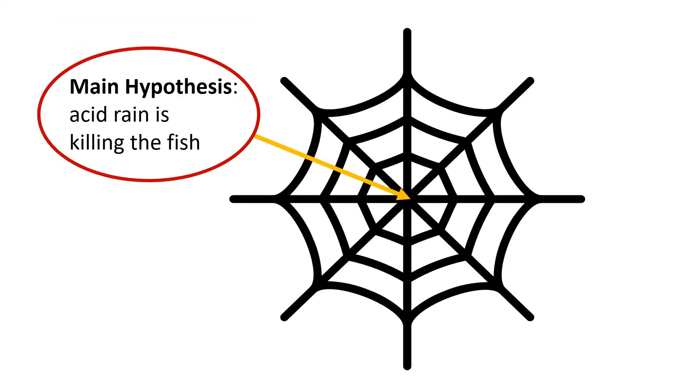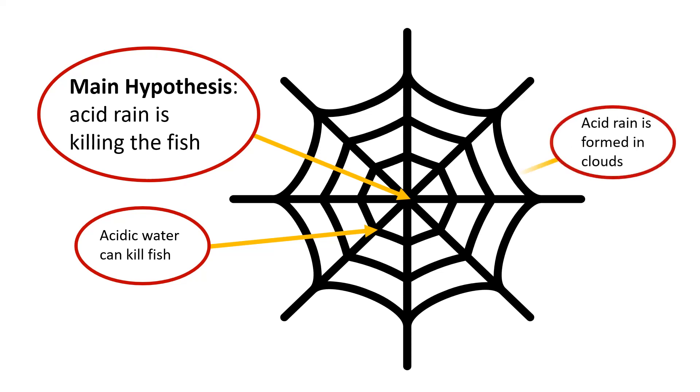Let's look at how this web might affect something that we've been talking about, and that is the situation with the unfortunate fish who are dying in the lake nearby. The main hypothesis we had was that acid rain is killing the fish. This hypothesis, however, depends on another hypothesis, and that is that acidic water can kill fish. There is another hypothesis yet, that acid rain is formed in clouds, and this hypothesis depends on the hypothesis that smokestack chemicals can form acids.